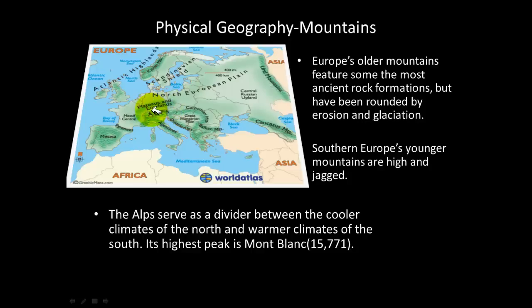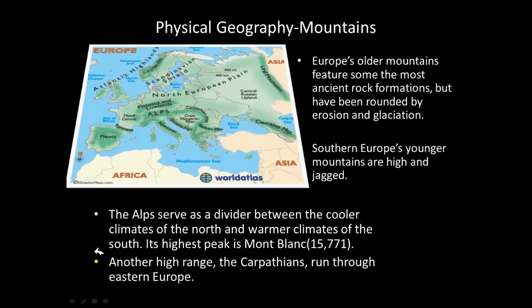The Alps, located in France and north of Italy, serve as a climatic divider between the cooler temperatures of northern Europe and the warmer climates of the south. The Alps act as a buffer, preventing cold air from penetrating southward. The Carpathian Mountains run through eastern Europe. Students are responsible for mapping the Alps, Pyrenees, Apennines, Balkan Mountains, Caucasus Mountains, Ural Mountains, and the Carpathians.